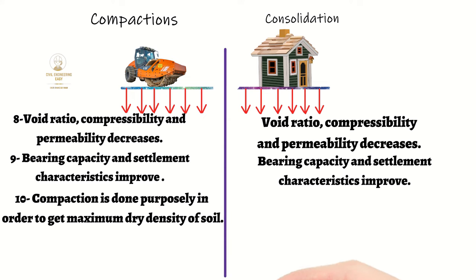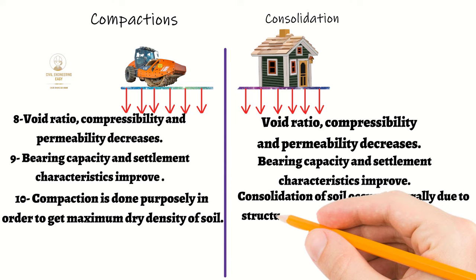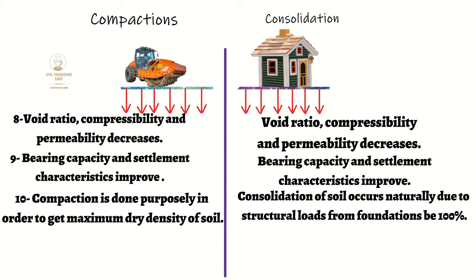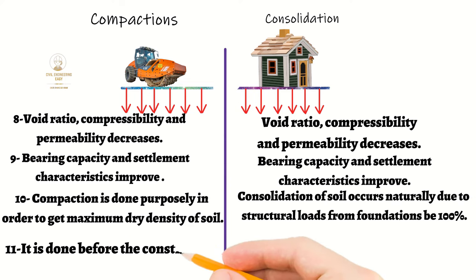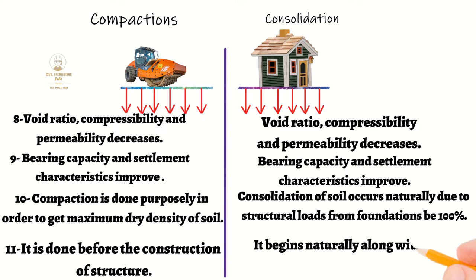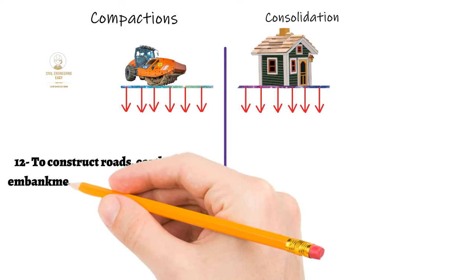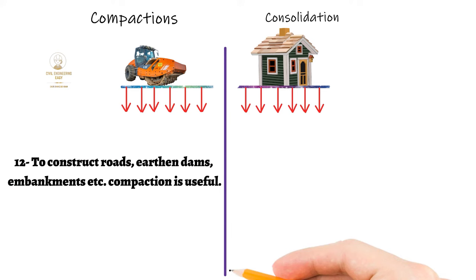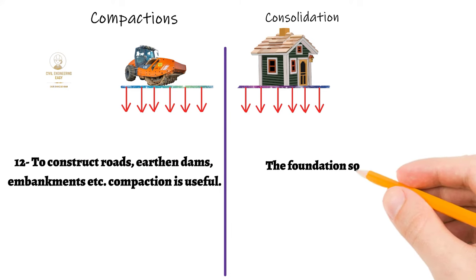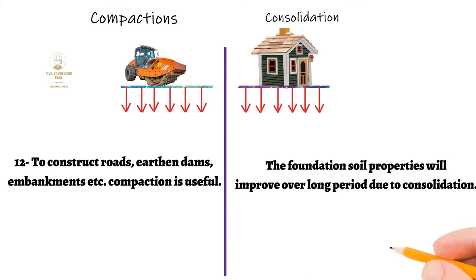Consolidation of soil occurs naturally due to structural loads from foundations. Compaction is done before the construction of a structure, while consolidation begins naturally along with the construction work. To construct roads, earthen dams, embankments, etc., compaction is useful, while foundation soil properties improve over a long period due to consolidation.